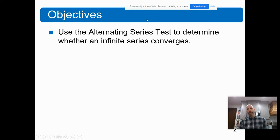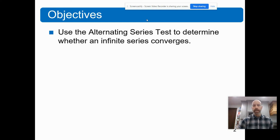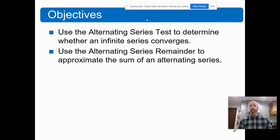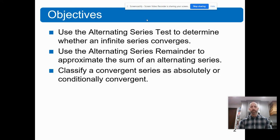We're going to use the alternating series test to determine if a series is convergent. We're also going to use the alternating series remainder to approximate the sum of an alternating series. Given a finite number of terms, we'll be able to determine how accurate that approximation is. Finally, I'd like to classify series as either absolutely or conditionally convergent.